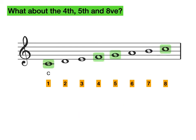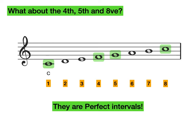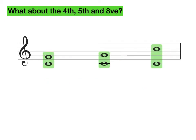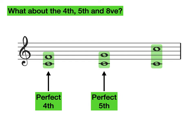But what about the fourth, fifth and octave note of C major? These are what we call perfect intervals. So C to F is what we call a perfect fourth. The distance between C and F is four — this is where we get the fourth from — and because it is a fourth, it is perfect. The next interval here is a perfect fifth. G is the fifth note of C major, and because it's a fifth, it is perfect. And lastly, here we have a perfect octave.